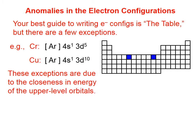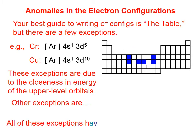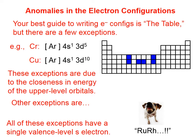These exceptions are due to the closeness in energy of these upper-level orbitals. There are several other exceptions. I've colored them in blue here on the periodic table, and we'll name those elements in just a second. All of them have a single valence level S electron.